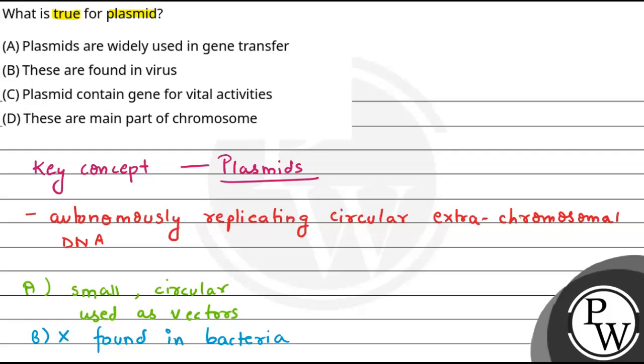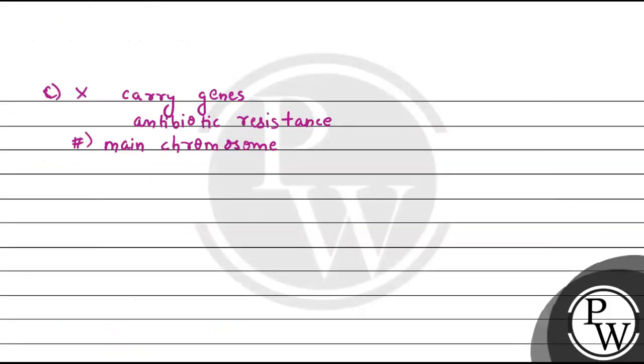Now, what is given in option D? It states that these are the main part of the chromosomes. D is also false. Why? Because these plasmids are separate from the chromosomal DNA. They are separate and different. This is why they are not the main part of the chromosomes.